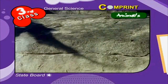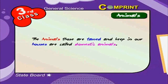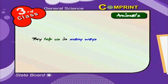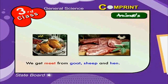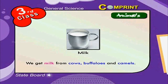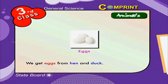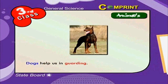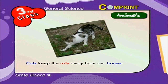The elephant is the biggest animal on land. The blue whale is the biggest animal in water. The eagle is the biggest bird. Animals that are tamed and kept in our houses are called domestic animals. We get meat from goat, sheep and hen. We get milk from cows, buffaloes and camels. We get eggs from hens and ducks.